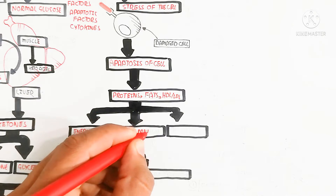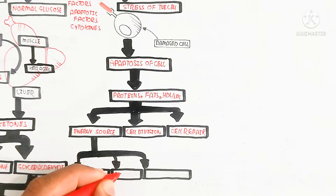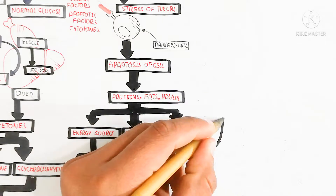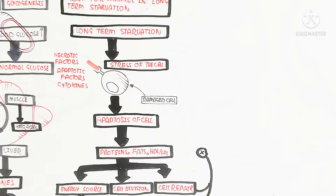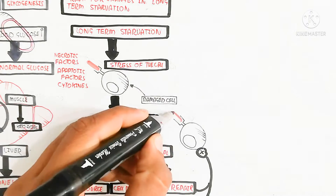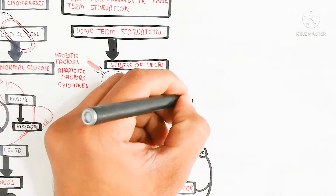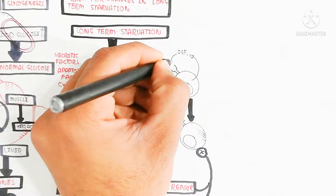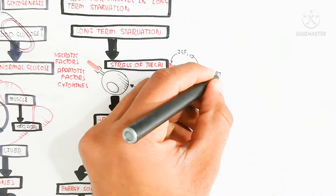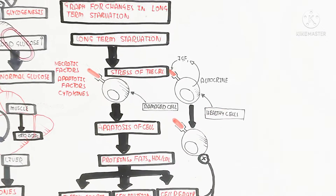Damaged cells undergo apoptosis, and proteins, fats, HDL, and LDL content are recycled as energy sources for cell division and cell repair. Healthy cells use insulin-like growth factor (IGF) in an autocrine manner, binding with IGF-1 receptor to proliferate and divide, maintaining homeostasis and health. That is why starvation of the body is anti-cancerous, because damaged cells are eliminated.